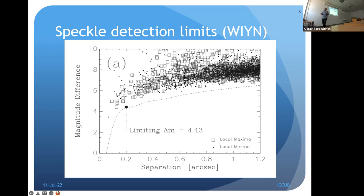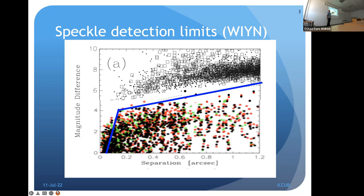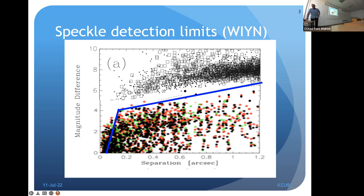You can also look at all the companions we detected at WIYN — that is the inverse of the detection limit plot. There's a nice separation between these two data sets divided by the detection limit curve. We've claimed for years that we can do a very good job of identifying companion stars next to exoplanet host stars, ruling out a large amount of parameter space for stellar companions by looking at separations far below the seeing limit.